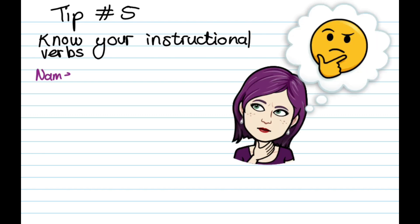Tip number five: know your instructional verbs. This is a big one for a lot of people. Remember, the instructional verbs tell you exactly what you need to do to achieve marks in this question. So, for example, certain questions will start with verbs that say name, state, list. These usually mean short or one-word answers.